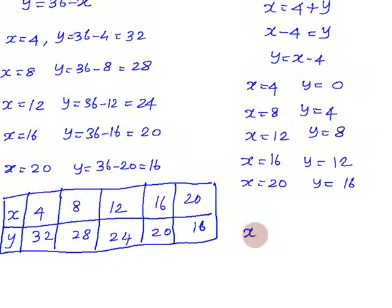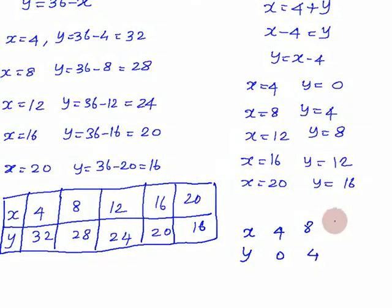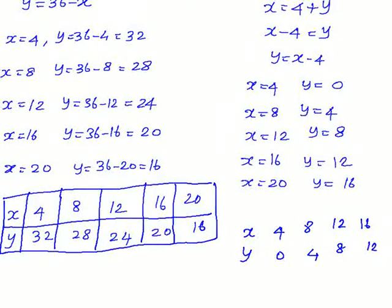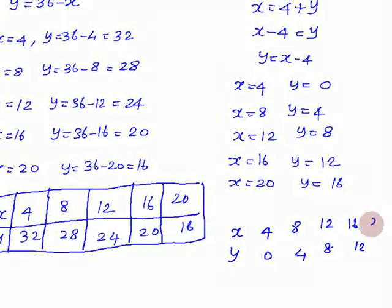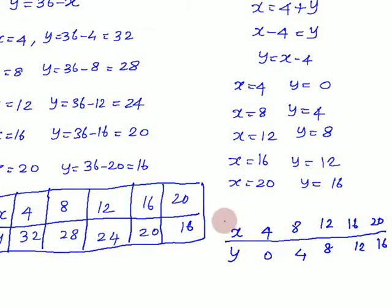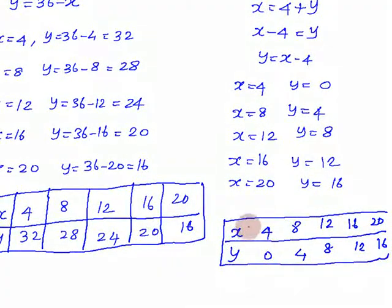For Equation 1 (x - y = 4), the table of values: x=4, y=0; x=8, y=4; x=12, y=8; x=16, y=12; x=20, y=16. This completes the table for the second equation.